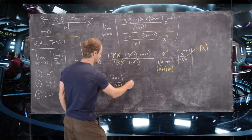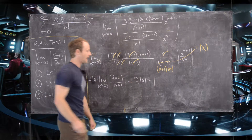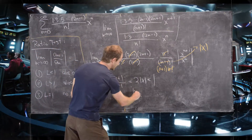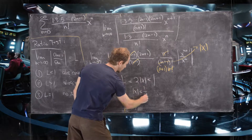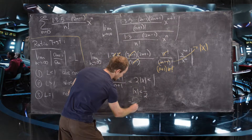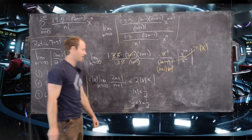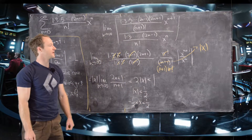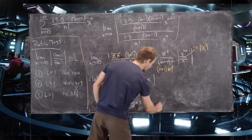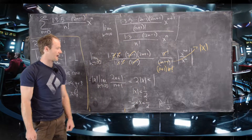Taking the limit gives us 2 times the absolute value of x. For convergence we need that to be less than 1, so the absolute value of x must be less than 1/2, meaning x is between negative 1/2 and positive 1/2. We can already say the radius of convergence is 1/2.